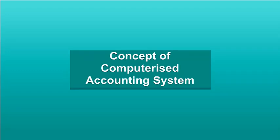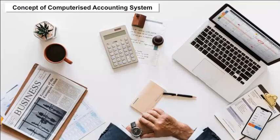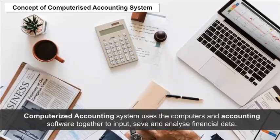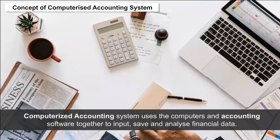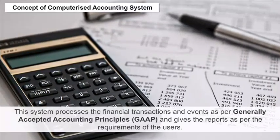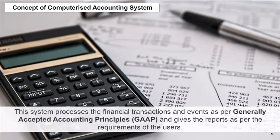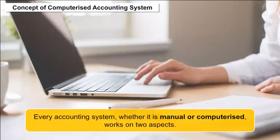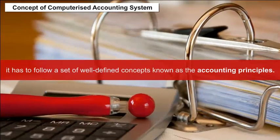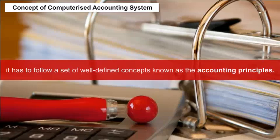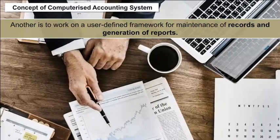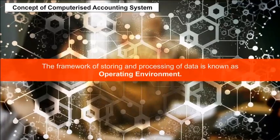Concept of Computerized Accounting System. A computerized accounting system uses computers and accounting software together to input, save, and analyze financial data. This system processes the financial transactions and events as per generally accepted accounting principles and gives the reports as per the requirements of the users. Every accounting system, whether manual or computerized, works on two aspects: following a set of well-defined accounting principles, and working on a user-defined framework for maintenance of records and generation of reports.